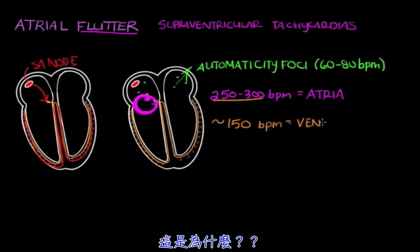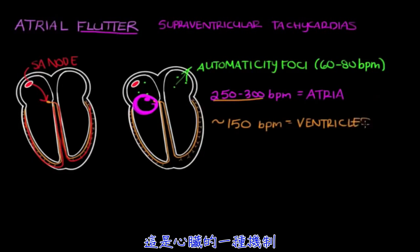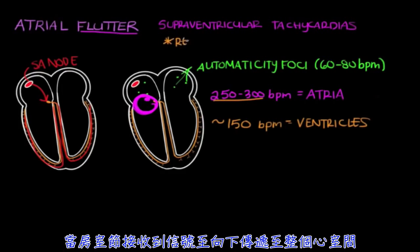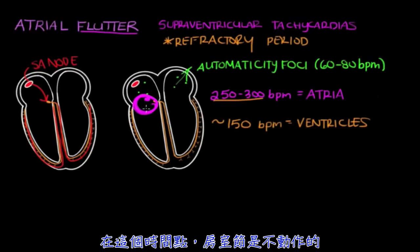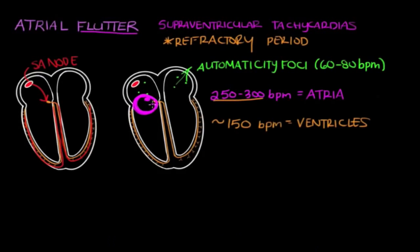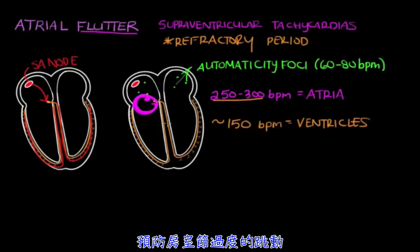Why is that? That's because there's a built-in mechanism in the AV node called a refractory period. After the AV node conducts a signal to the lower half of the heart, there's a window of time — the refractory period — where the AV node can't fire again, even if it gets a signal to do so. This acts as a backup mechanism to prevent the AV node from overfiring and the ventricles from contracting too quickly.